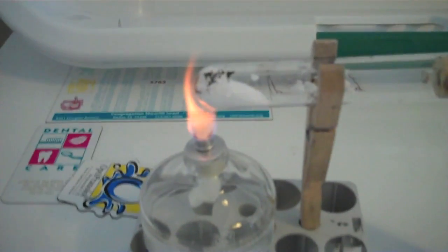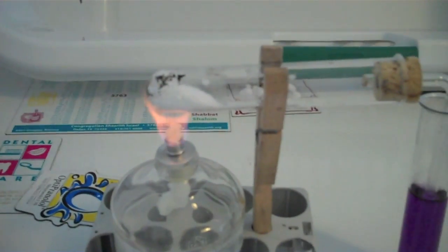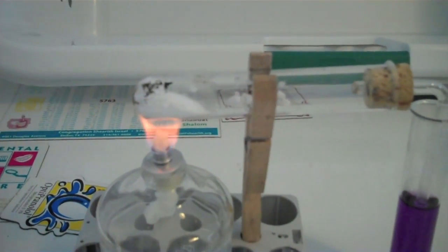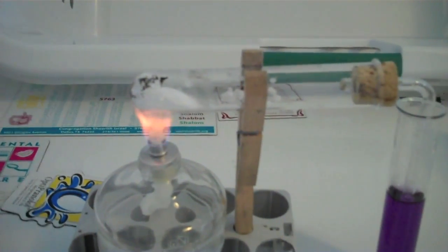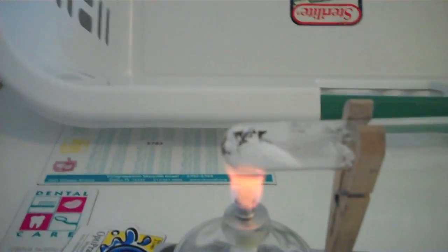So I've lit my alcohol lamp or burner, and what you want to do now is just let it sit there and heat the baking soda, the sodium hydrogen carbonate, until you see bubbles. And if you don't see bubbles it'll still produce sodium carbonate. I didn't see any bubbles but I still got sodium carbonate.